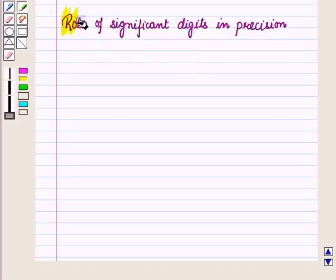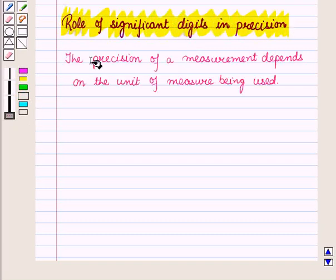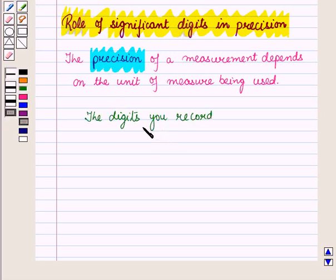Now let us discuss role of significant digits in precision. The precision of a measurement depends on the unit of measure being used. The digits you record when you measure are called significant digits.